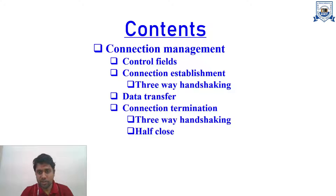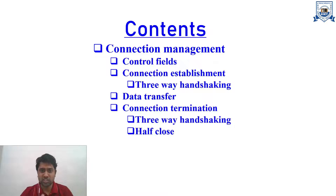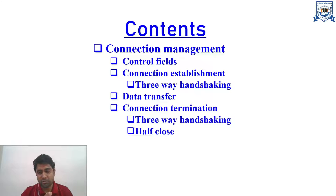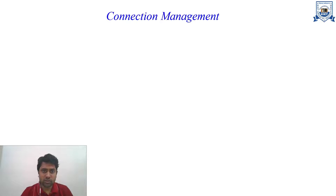We'll move on to connection establishment, the three-way handshaking procedure. Once all three steps are successfully completed, the connection is established. After that comes the data transfer phase, and once all parties have finished, they proceed to termination. There are two different strategies for termination: three-way handshaking and half-close.